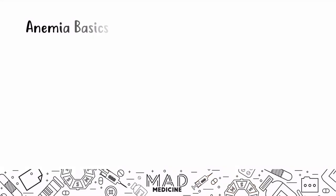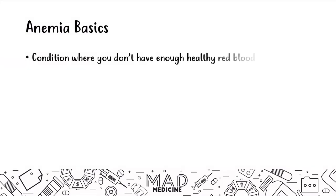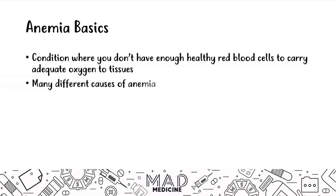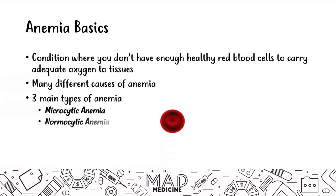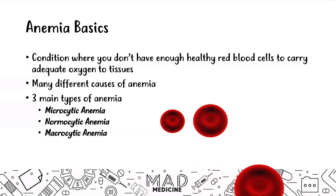So we're going to talk about anemia really quickly. Anemia is a condition where you don't have enough healthy red blood cells to carry an adequate amount of oxygen to your tissues, and there are many different kinds of anemias. The three main types for Step 1 are going to be microcytic anemia, normocytic anemia, and macrocytic anemia.